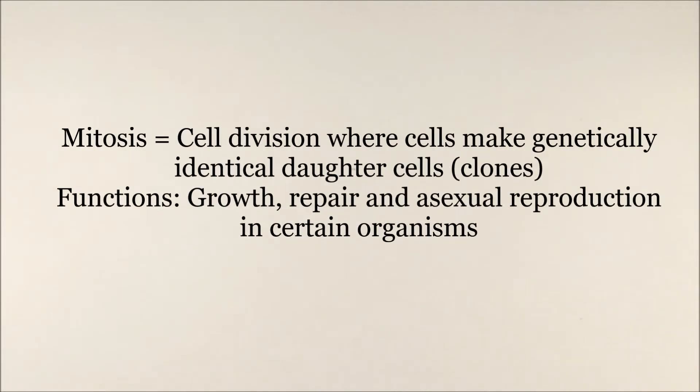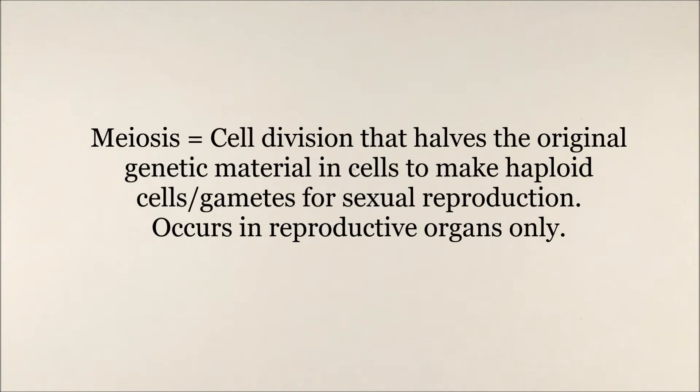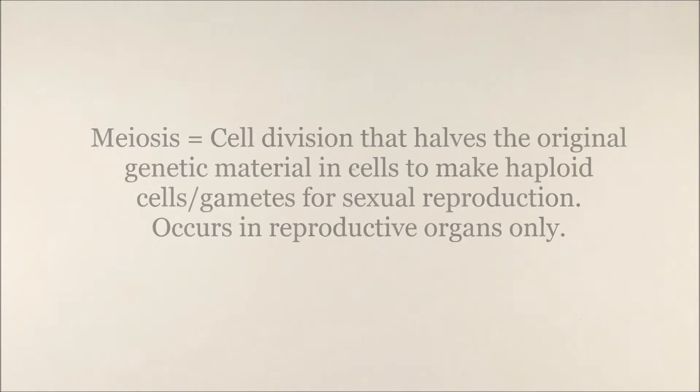In today's video we'll be thinking about meiosis, which is a type of cell division. There are two types of cell division: mitosis and meiosis. Mitosis is cell division that helps us grow and repair damaged tissues, and bacteria and other organisms use mitosis for asexual reproduction to make more of themselves. Meiosis happens in the reproductive system — it's the cell division that makes gametes, which are haploid cells like sperm and egg cells, allowing them to fuse in fertilization to make a new organism.